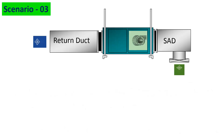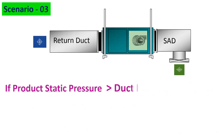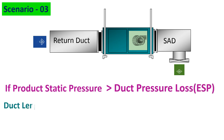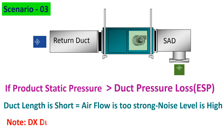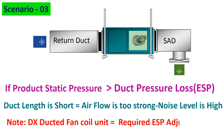Scenario three: if the product static pressure is more than the duct pressure loss, the ductwork is too short, more air volume flows, and the noise level is high — ESP adjustment is needed in DX ducted fan coil units.